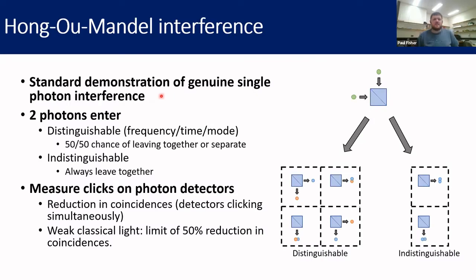Hong-Ou-Mandel interference is the standard demonstration that people use in order to show that they've got interference between genuine single photons, and not something like thermal states or just dim coherent light.